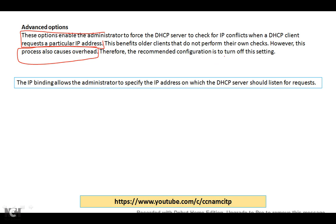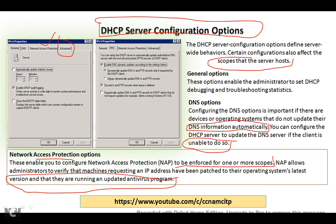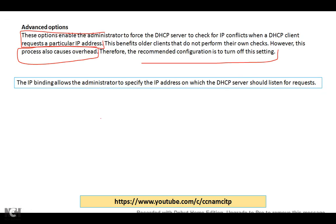Therefore, the recommended configuration is to turn off this setting — we can enable it later if needed. Another option is IP binding. There is an option here — if we click on DNS, we see 'Enable DNS dynamic updates according to the settings below,' which we can configure. IP binding allows the administrator to specify the IP address on which the DHCP server should listen for requests. We can specify which address our DHCP server accepts requests on, using the Advanced option.